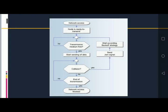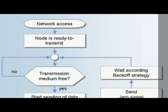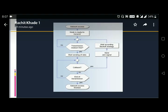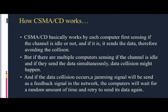This is the CSMA CD algorithm. CSMA CD works by having each computer sense if the channel is idle. If it is idle, it sends the data, thereby avoiding collision. But if multiple computers sense the channel as idle and send data simultaneously, a collision might happen. If data collision occurs, a jamming signal will be sent as a feedback signal in the network, and the computers will wait for a random amount of time before retrying to send their data.